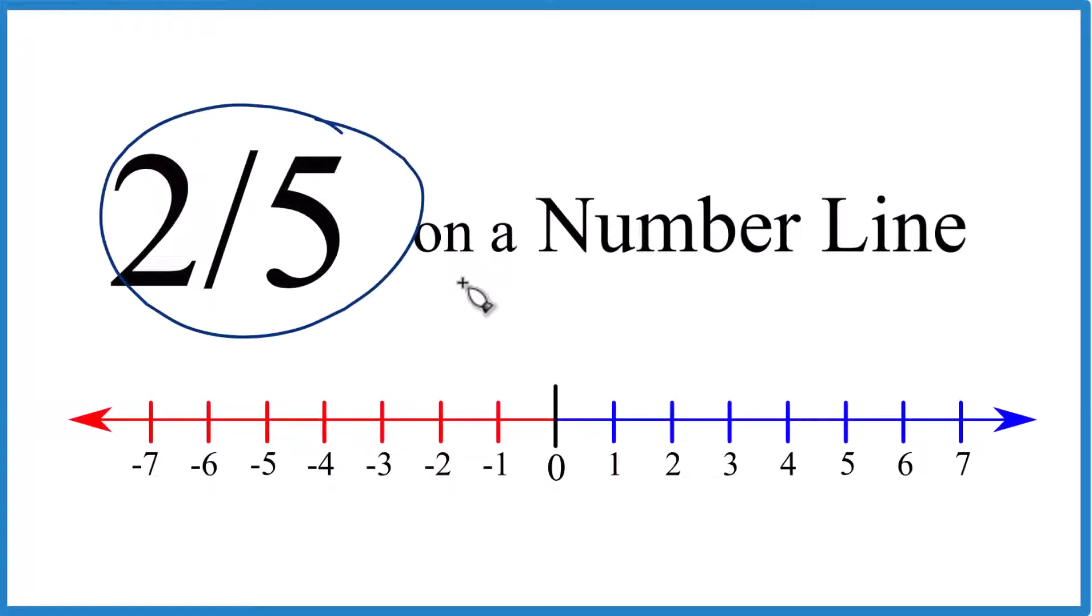Let's find two fifths on a number line. So first off, two fifths, that's a positive number. So it's gonna be over here in our number line in the blue area.